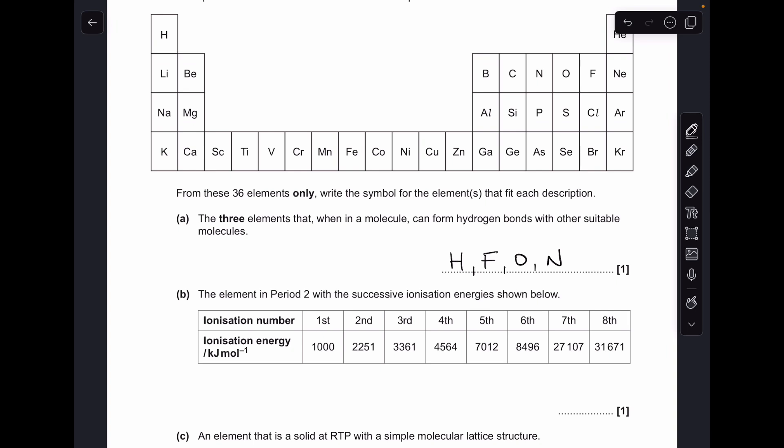Part B, so the element in period 2 with this set of successive ionisation energies. We're talking about from lithium to neon. We're looking for the big jump up in ionisation energy, which tells us when we're breaking out from the outer shell into an inner shell. You can see that occurs after the sixth ionisation energy, so 6 to 7 is the big jump. That means this element is in group 6, therefore it's oxygen.